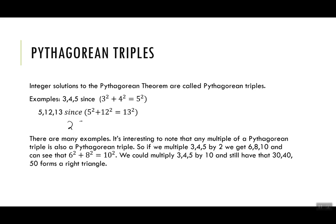Again, let's write that out. 5 squared is 25, 12 squared is 144, and that's equal to 13 squared, which is 169.